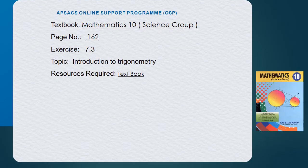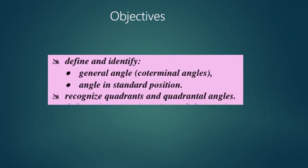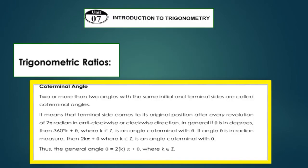Textbook Mathematics 10, Science Group, Page 162, Exercise 7.3. Topic: Introduction to Trigonometry. Resources required: textbook. Objectives: define and identify general angle, co-terminal angles, angle in standard position; recognize quadrant and quadrantal angles; and trigonometric ratios.